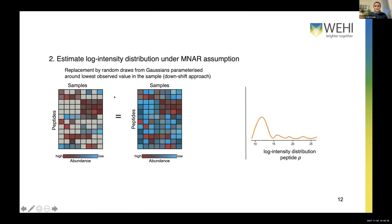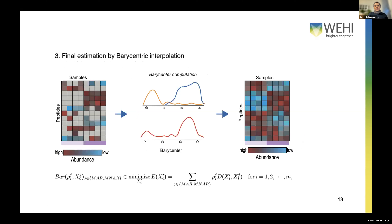For estimation under the missing not at random assumption, we follow the typical downshift approach. With this approach, every missing value is replaced by random draws from a Gaussian distribution parameterized around the lowest observed value — so you replace missing values with very low values. Therefore, the expected distribution has its mass around the lowest values.